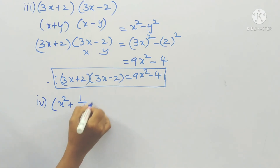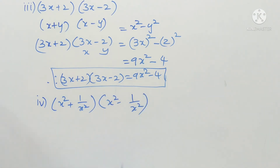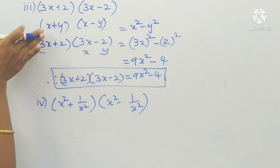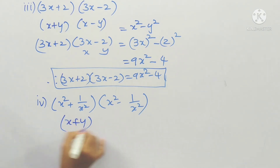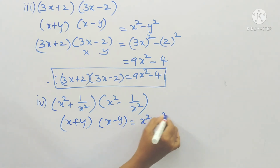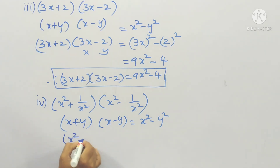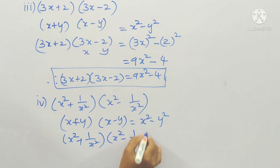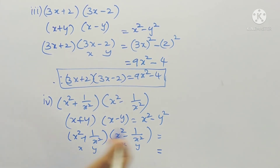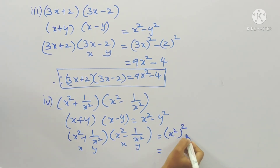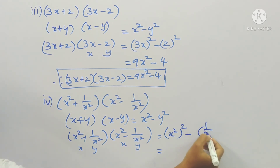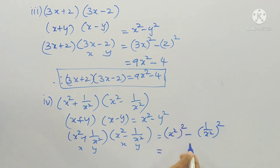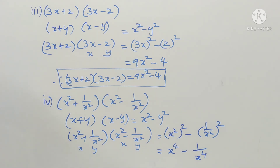Fourth problem: (x² + 1/x²). This is also in the identity form (x + y)(x − y) = x² − y². Here in place of x we have x², and in place of y we have 1/x². Applying the identity: (x²)² − (1/x²)² = x⁴ − 1/x⁴.